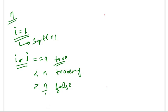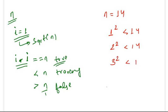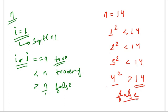Let's try another example where n is 14. 1 squared is less than 14, so we move to 2. 2 squared is also less than 14, so we move to 3. 3 squared is also less than 14, so we move to 4. But 4 squared is greater than 14, which means we have surpassed 14 without finding a square root. Thus 14 is not a perfect square and we return false.